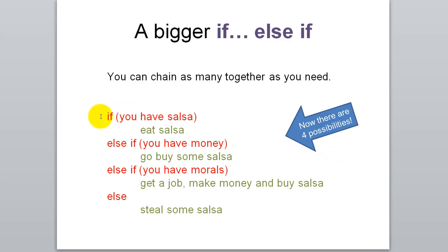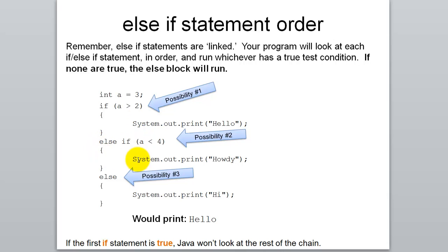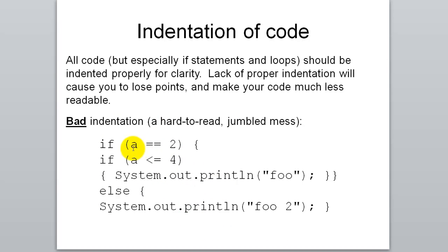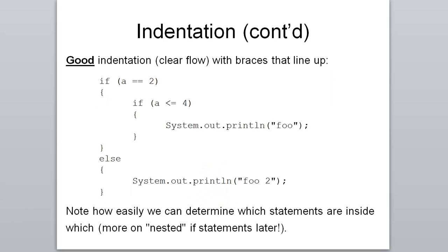You can chain as many else-ifs as you want. Here's an example with four possibilities: if you have salsa eat it; else if you have money go buy some; else if you have morals get a job and buy salsa; else just steal the salsa. Notice there's no possibility where you don't get salsa. Also notice that indentation is very helpful for reading code. The print statements are indented inside the if blocks using the tab key, making it easy to see the structure. Without proper indentation, the code is very hard to read.